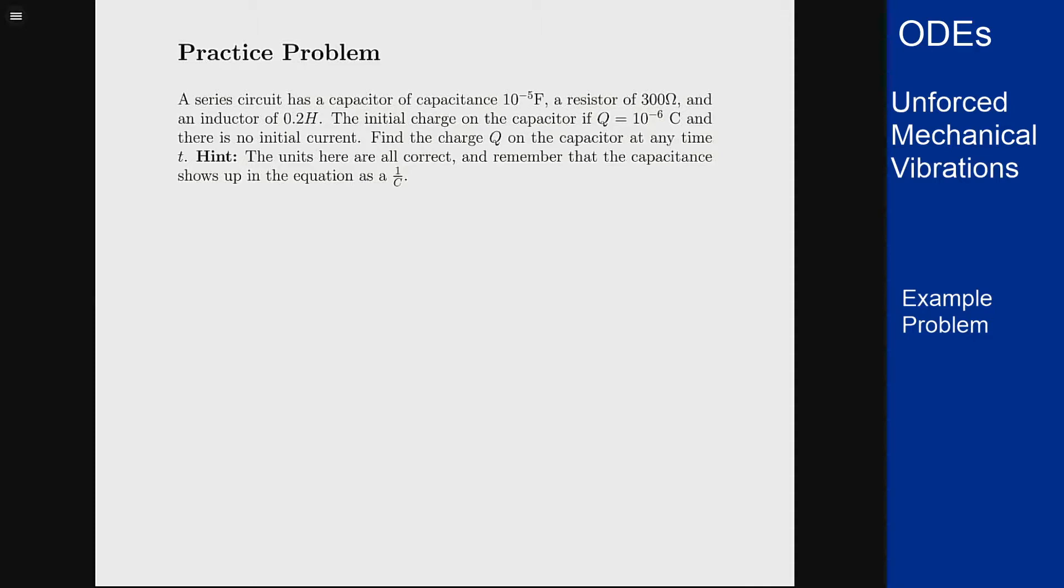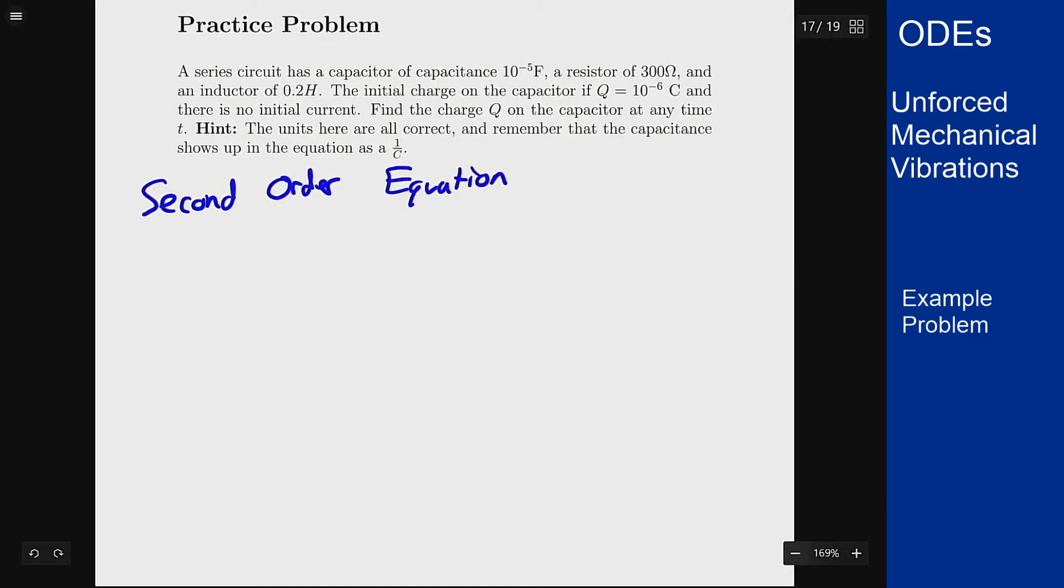We want to find the charge at any time which involves solving a second order equation. So let's first write out this equation. The circuit comes down to the inductance times the second derivative of the charge plus the resistance times the first derivative plus 1 over the capacitance times the charge itself equals 0 because there's no external voltage.